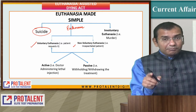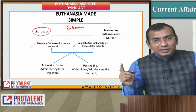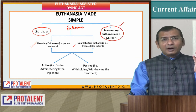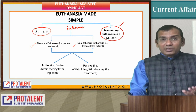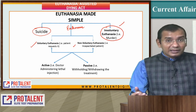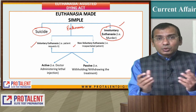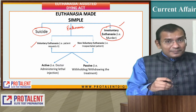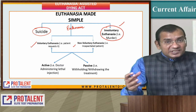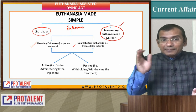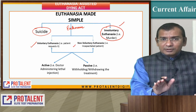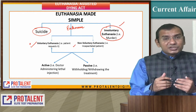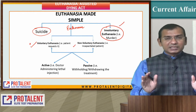Involuntary euthanasia may fall into the category of murder or culpable homicide — it means you were not aware and someone gave you medication to kill you. Non-voluntary means you had no capacity to give consent, due to which your relatives take the decision. Voluntarily means the patient himself gives the request. I hope the entire idea is very clear.